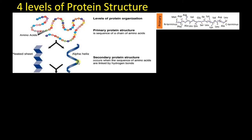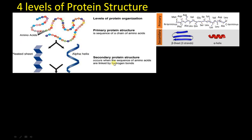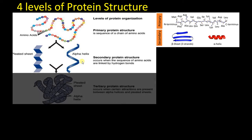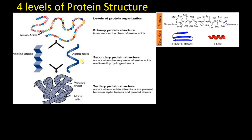This primary structure folds and forms the secondary structure. The most common secondary structures are alpha helix and beta sheets, formed with the addition of hydrogen bonds. The secondary structure further folds to form the three-dimensional functionally active structure called the tertiary structure, which is the biologically active conformation of the majority of proteins.